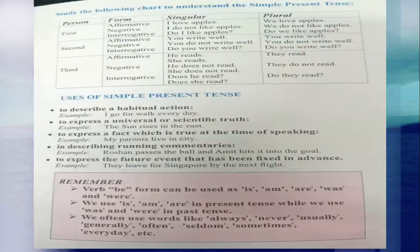Now let us study the chart of three forms. The first column shows the type of sentence — affirmative, negative, and interrogative. The second column is for singular sentences and the third column is for plural sentences, covering first person, second person, and third person.